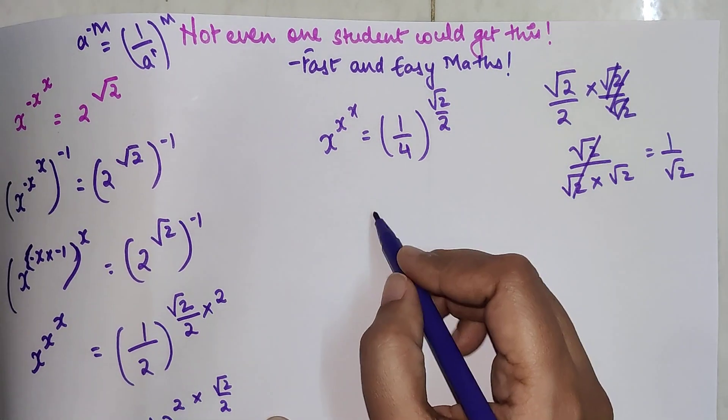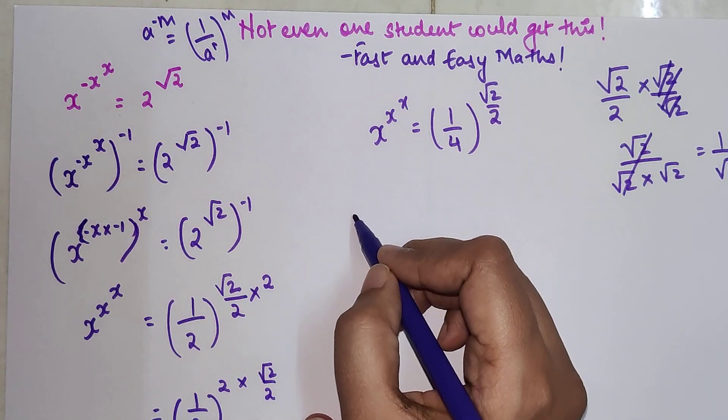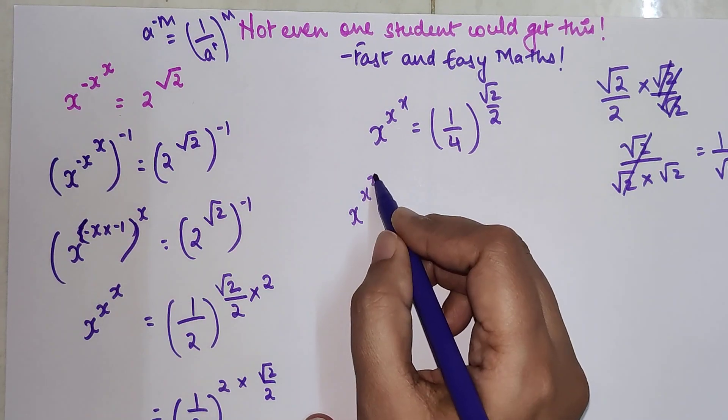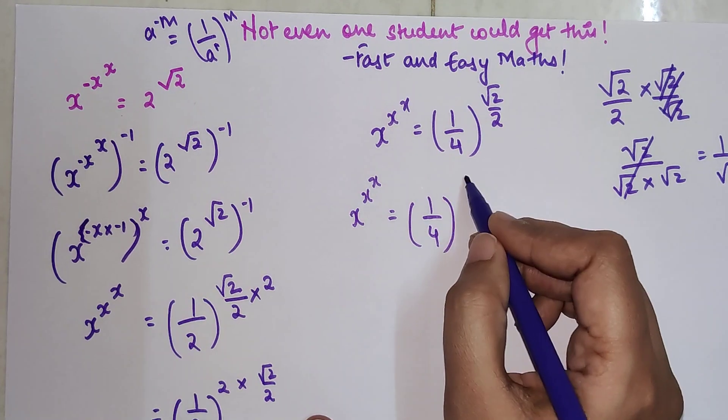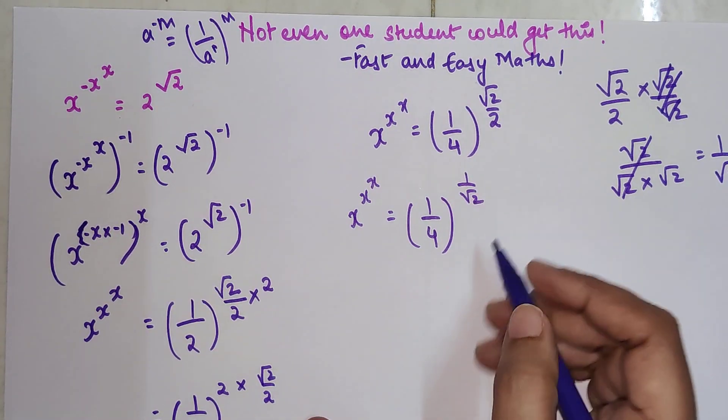So here your question now becomes x raised to x raised to x equals 1 upon 4 the whole raised to 1 upon root 2.